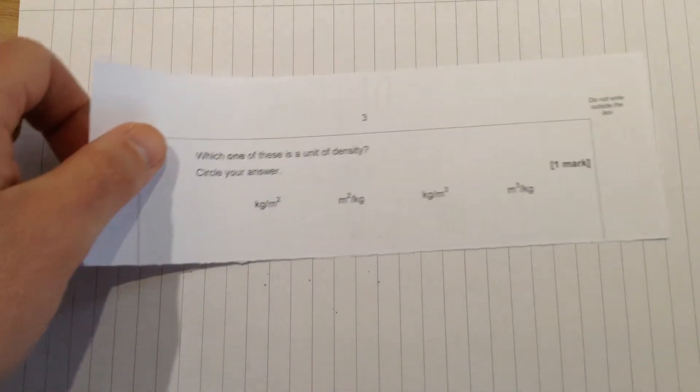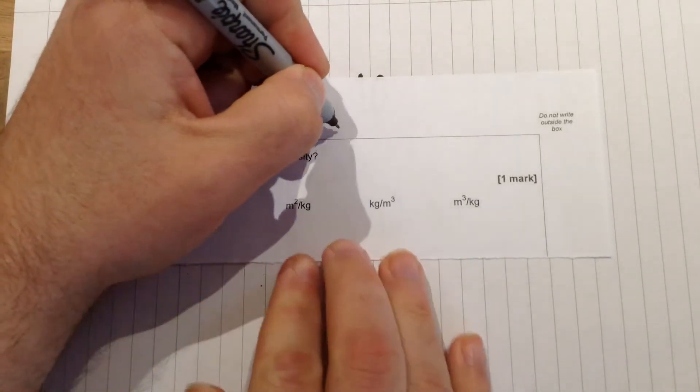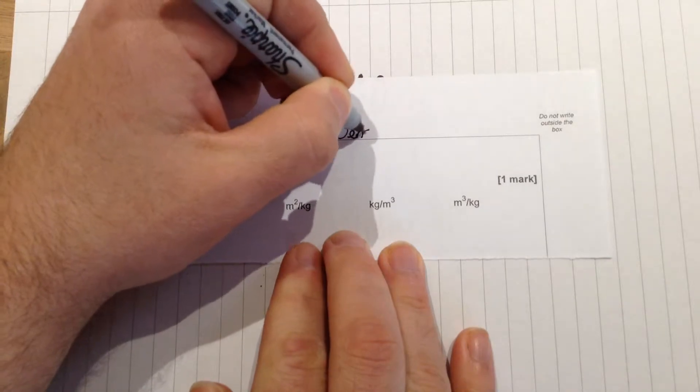Here's your first question. Here what we need to do is work out which one of these could be a unit of density. Well it's quite useful at that point to probably write down the little formula for density.